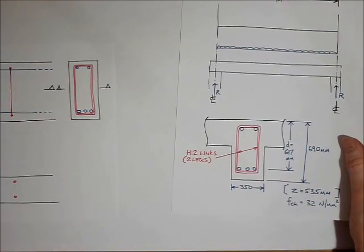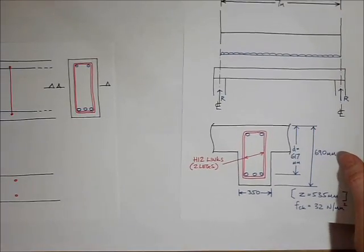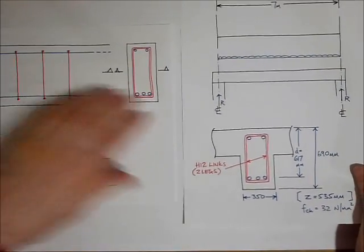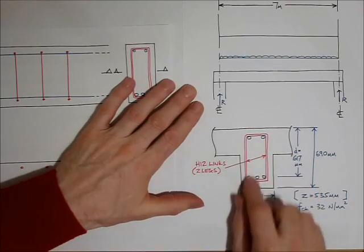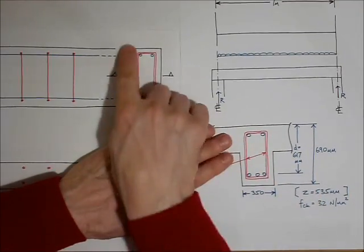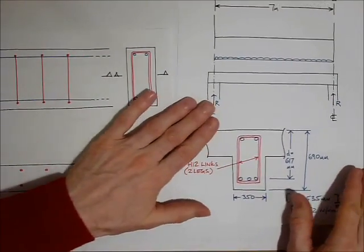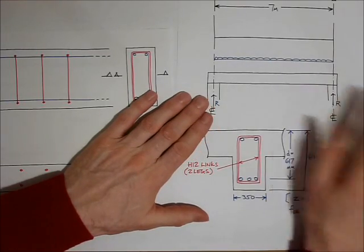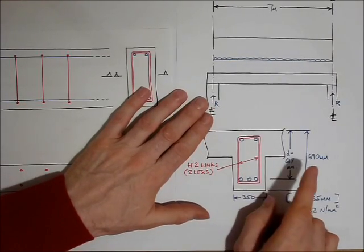What we need to do now is think about the shear reinforcement for this beam. Perhaps you can tell from this section that it's actually a T-beam. I'm considering it as a rectangular beam just for simplicity and for the sake of this tutorial.